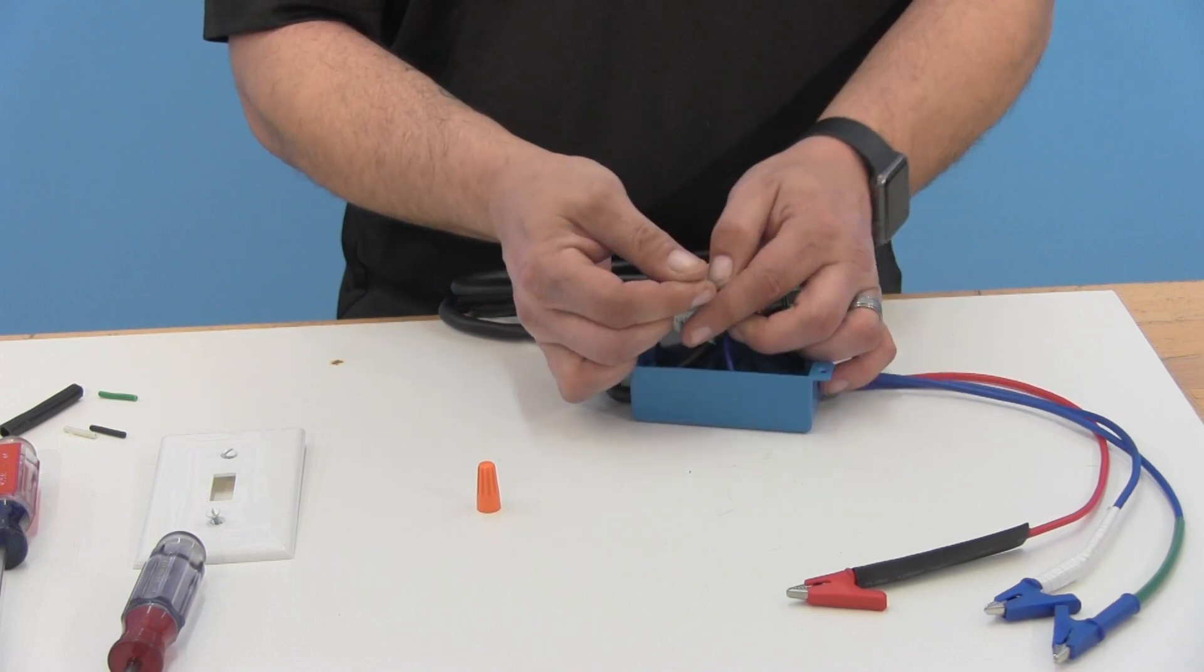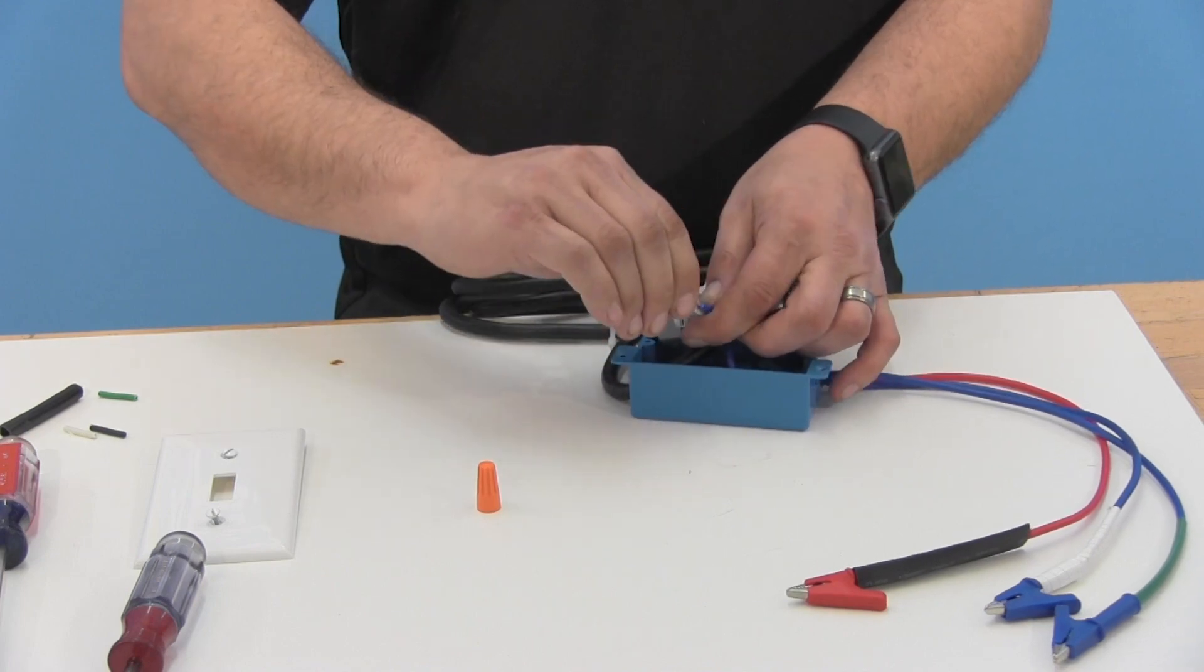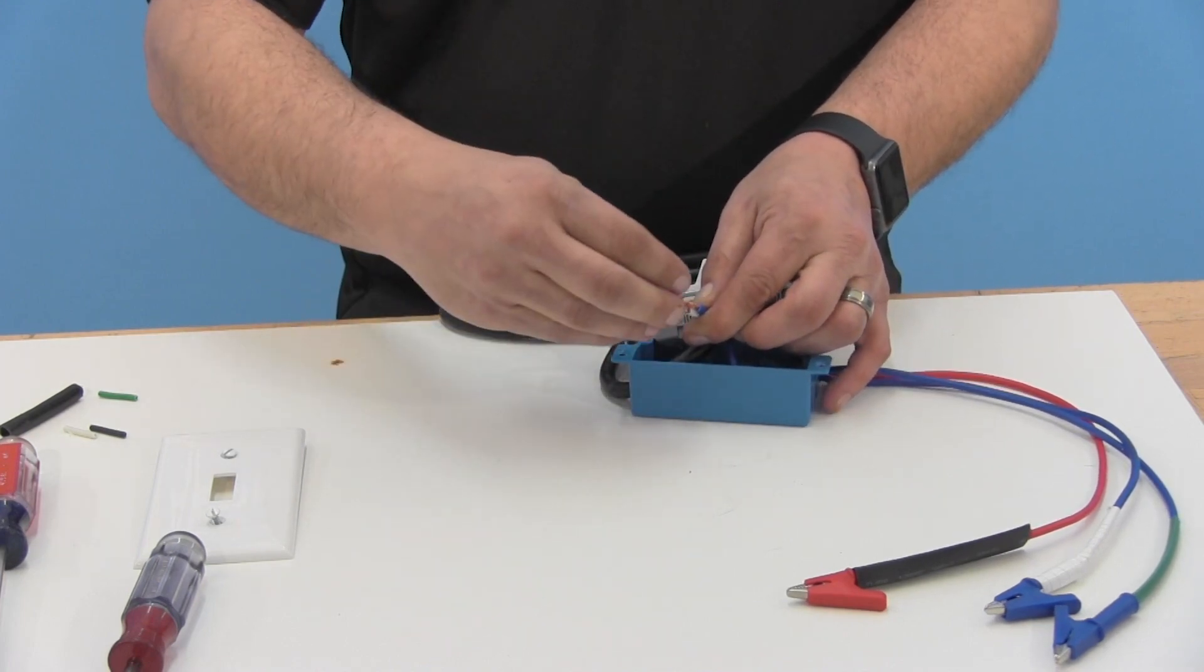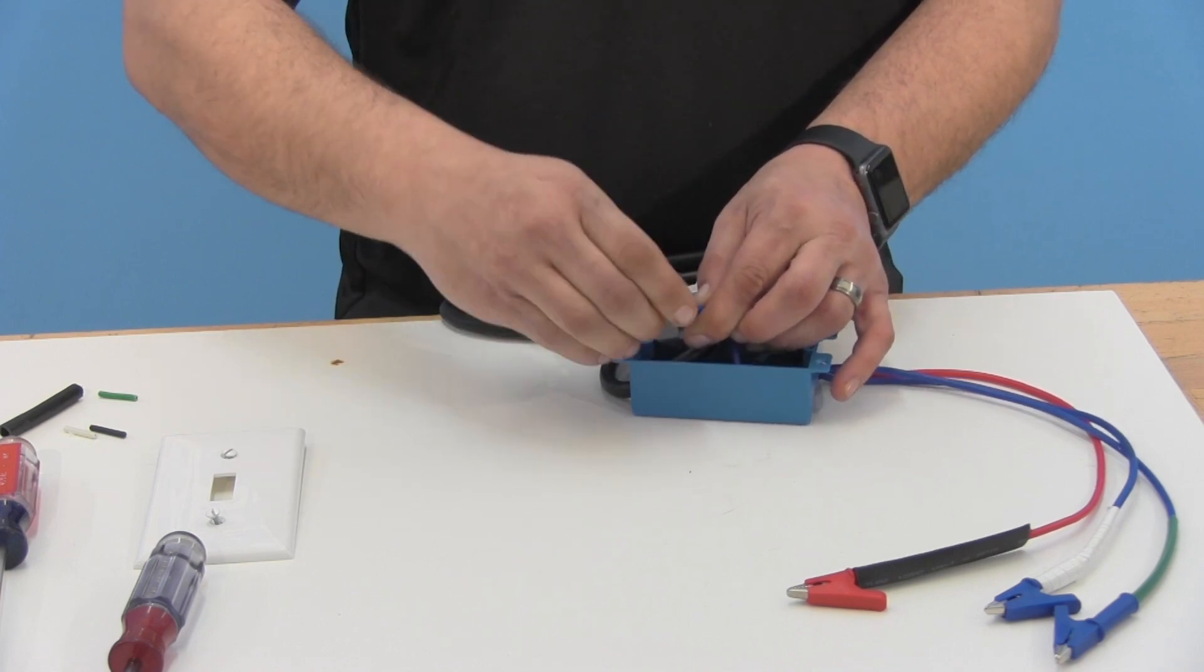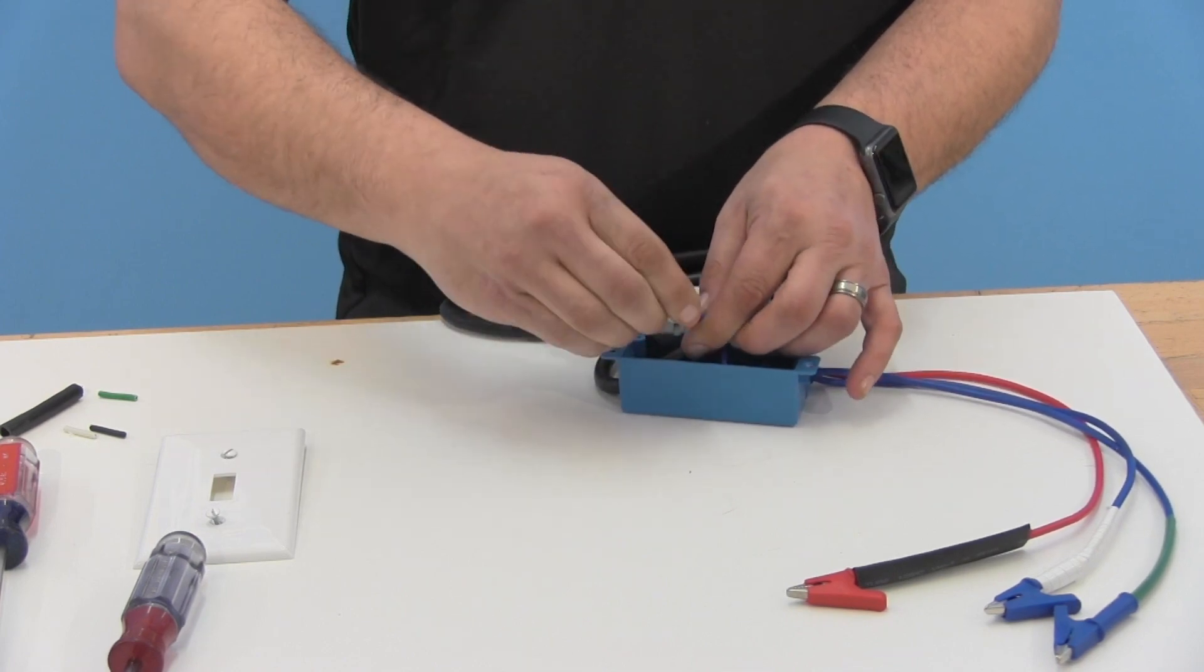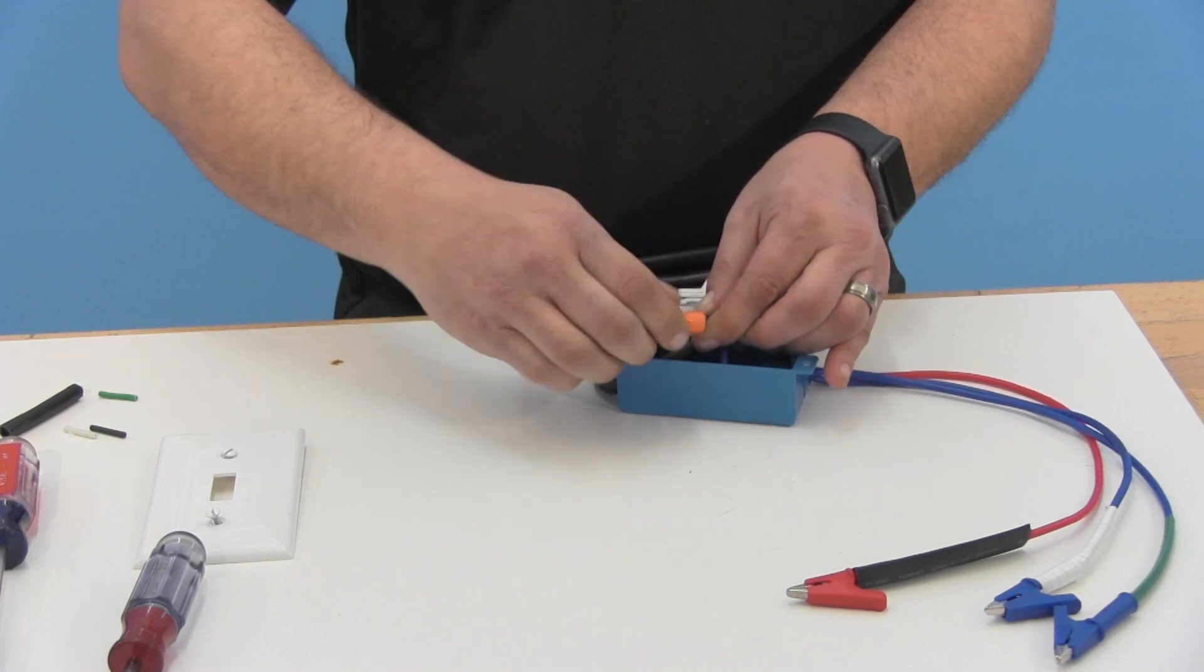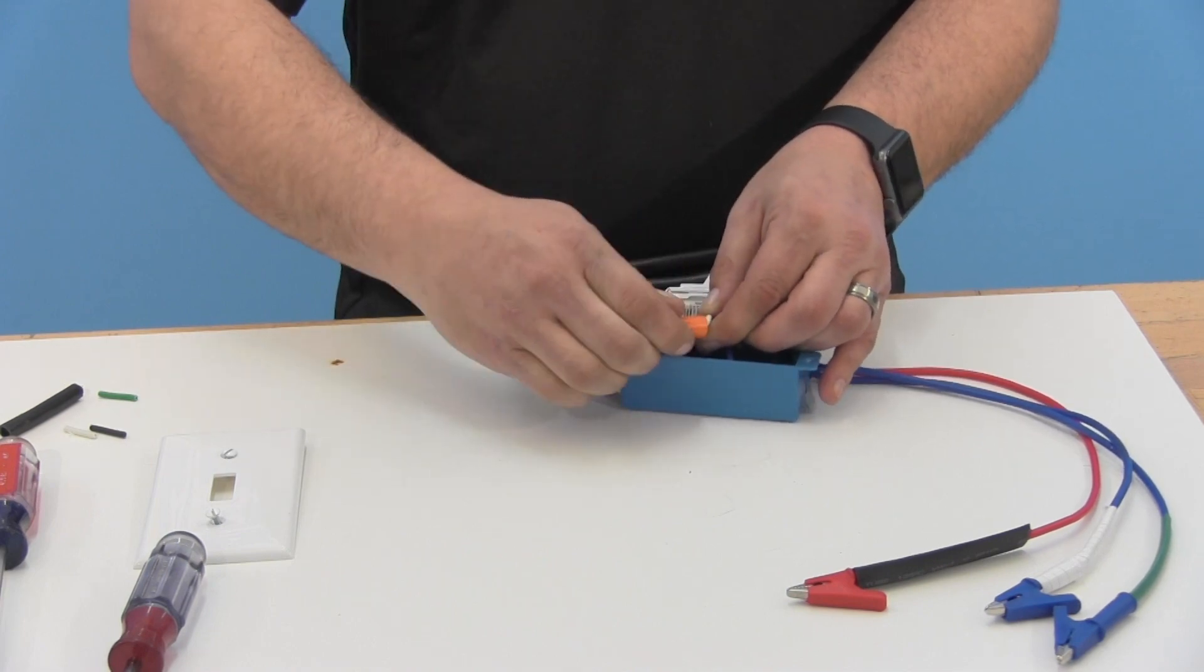Don't twist these wires together, just simply place them next to each other. Using a wire nut, go ahead and screw that wire nut down and the wires should actually start to twist on their own. That kind of indicates that they're braiding together.